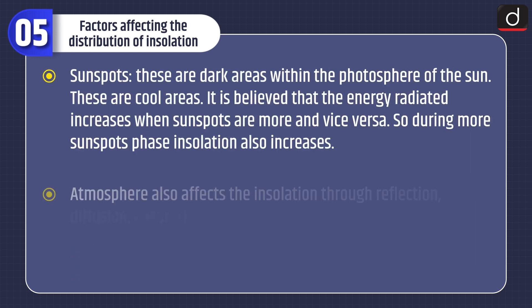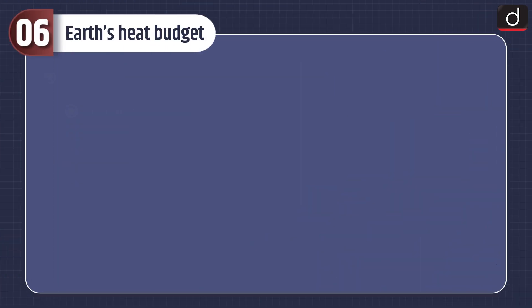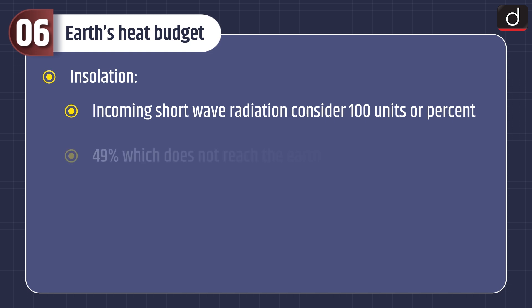Sunspots are dark areas within the photosphere of the sun and are cool areas. It is believed that energy radiated increases when sunspots are more and vice versa, so during a high-sunspot phase, insolation also increases. Lastly, the atmosphere also affects insolation through reflection, diffusion, absorption, and scattering.